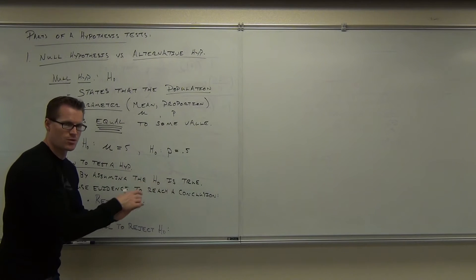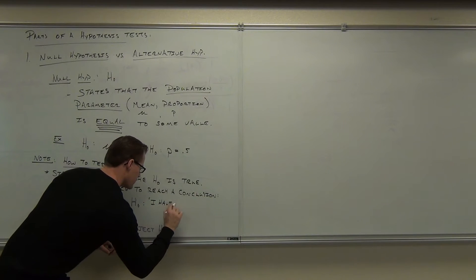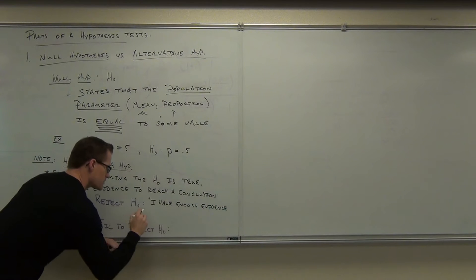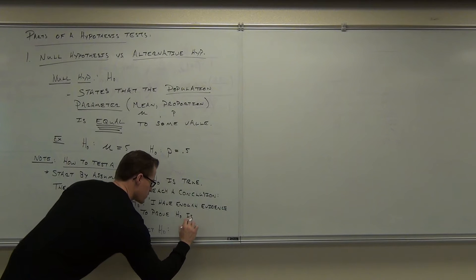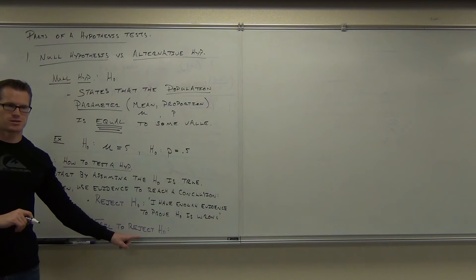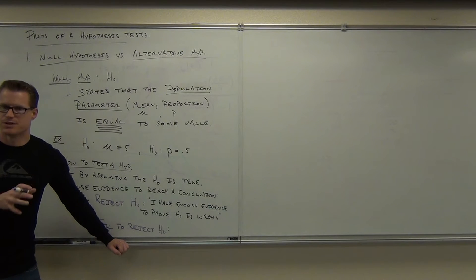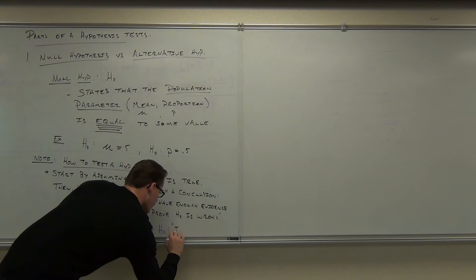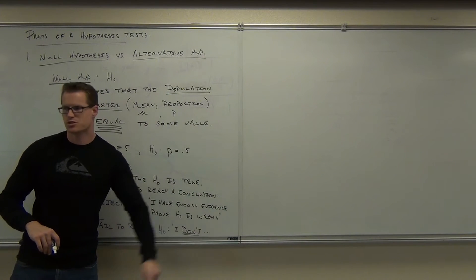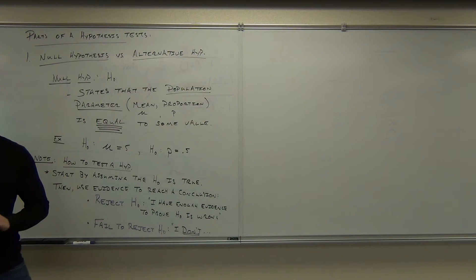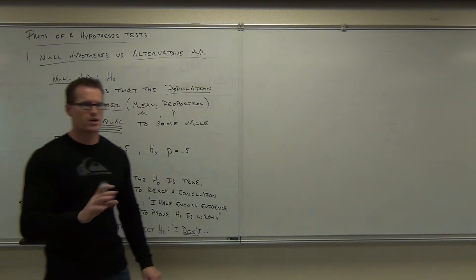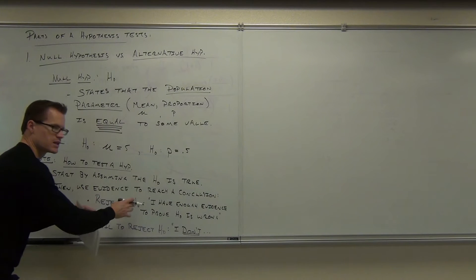Rejecting H sub zero says in English: I have enough evidence to prove H sub zero is wrong. Failing to reject says: I don't have enough evidence to prove H sub zero wrong. A little side note: you cannot accept H sub zero. It's impossible. You're never ever going to accept H sub zero. You can only reject it or fail to reject it.